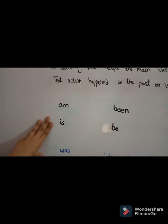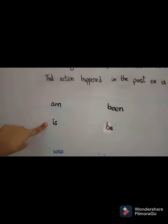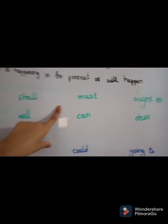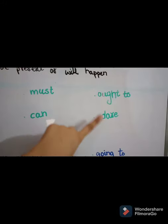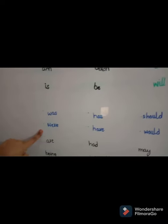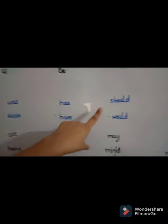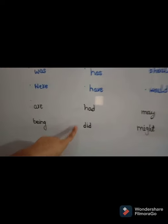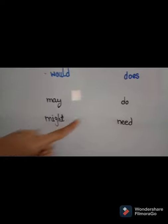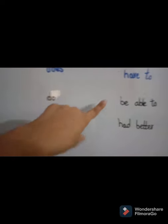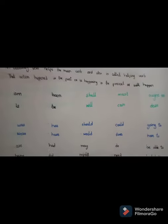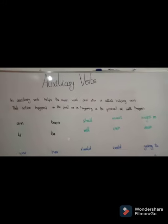Here are some main auxiliary verbs: am, is, been, be, shall, will, must, can, dare, was, were, has, have, should, would, could, does, going to, have to, are, being, had, may, might, do, need, be able to, and had better. Now we can look at examples of auxiliary verbs explaining tense, mood, or voice.